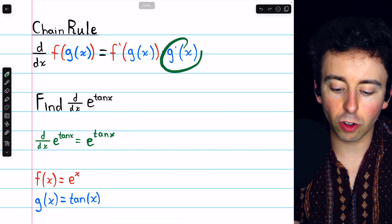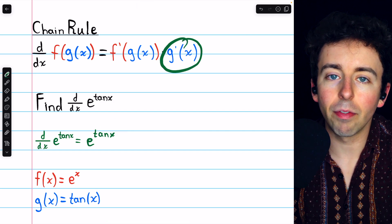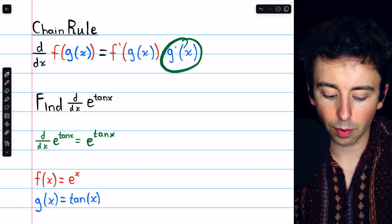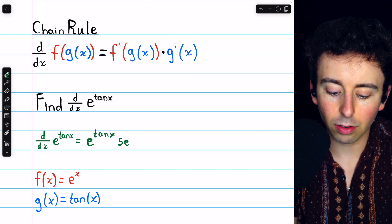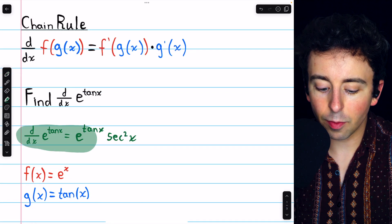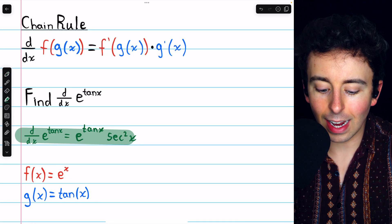But then we multiply by g prime, the derivative of that inside function. The inside function is tan x, and the derivative of tangent of x is secant squared x. And that's how to find the derivative of e to the tangent x.